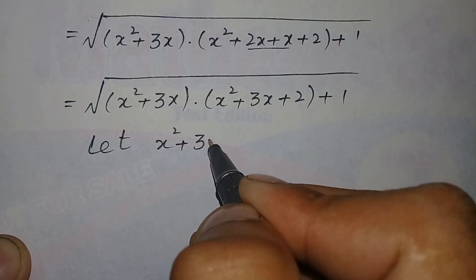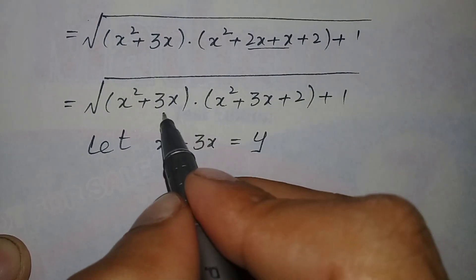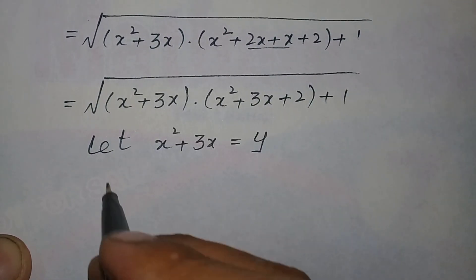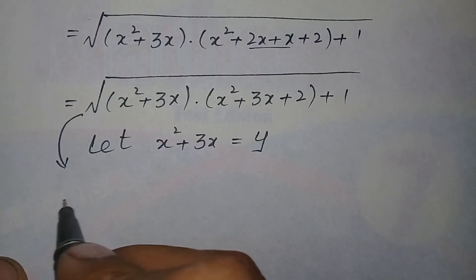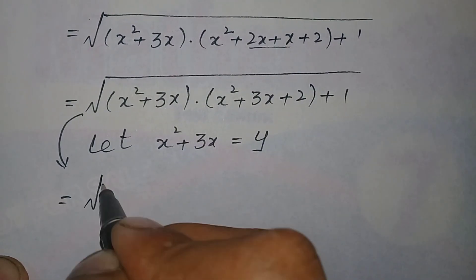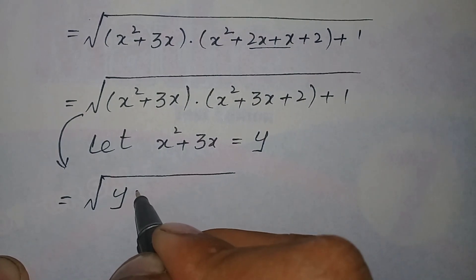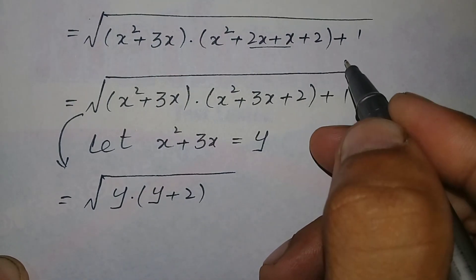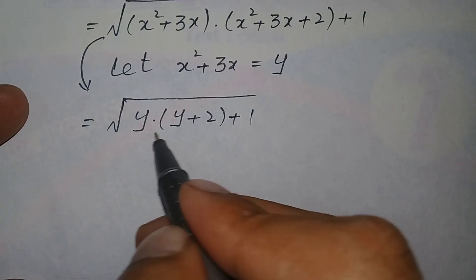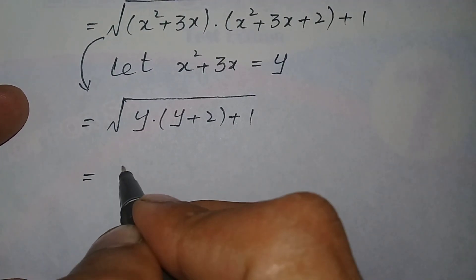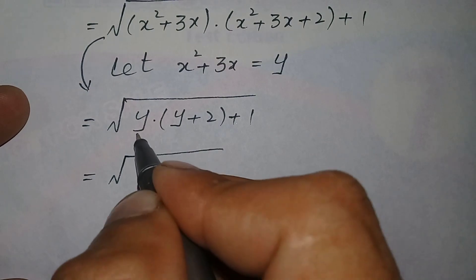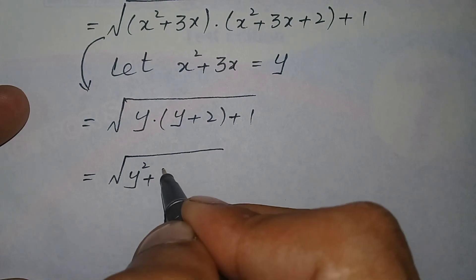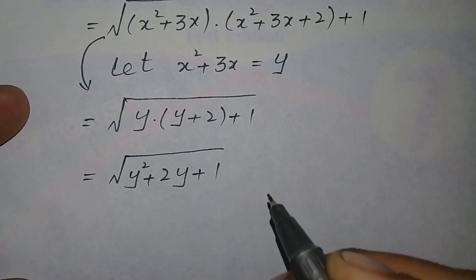Now let y equal x² + 3x. We will replace x² + 3x in this expression with y. So it becomes square root of y times (y + 2) plus 1. Multiplying these two terms: y times y is y², and y times 2 is 2y, plus 1.